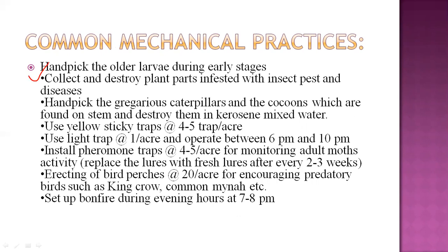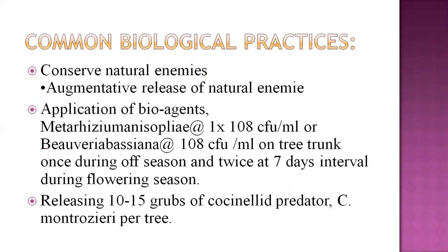Mechanical practices for mango are similar to pomegranate: manually hand pick older larvae when early stage larvae are observed, collect and destroy infested plant parts, and hand pick gregarious caterpillars or cocoons found on the stem or plant parts, destroying them in kerosene water. Use yellow or blue sticky traps at four to five per acre to manage sucking pests like aphids, mealybugs, and whitefly. Use light traps operated between 6 PM and 10 PM, install pheromone traps to monitor adult moths, replace lures every two to three weeks, erect bird perches, and set up bonfires during the evening.